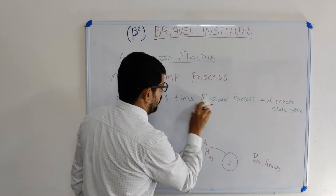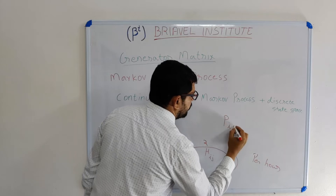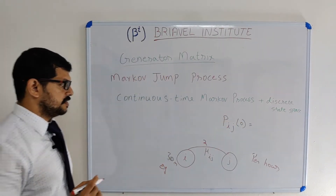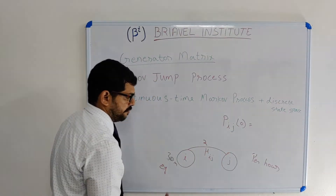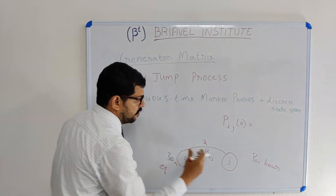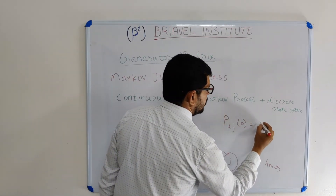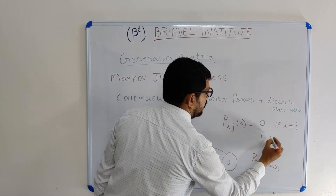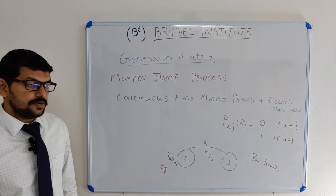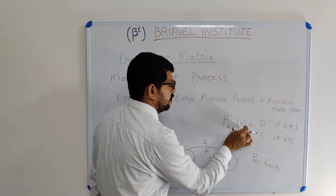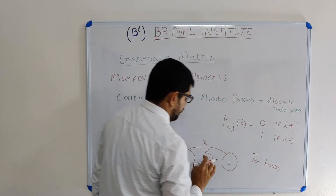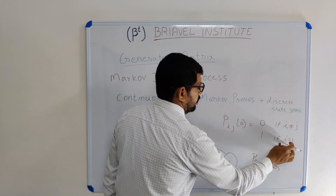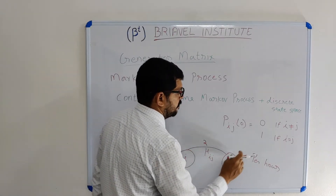We can explain this another way using the transition probability P(i,j). At time 0, there is no transition — we are either staying in state i or staying in state j. So we can say: P(i,j) at time 0 equals 0 if i ≠ j, and equals 1 if i = j. These are the two probabilities for transition probability at time 0.